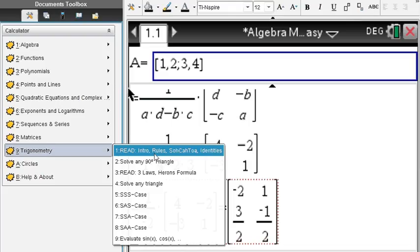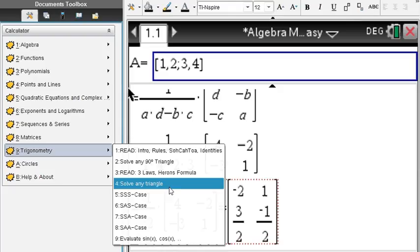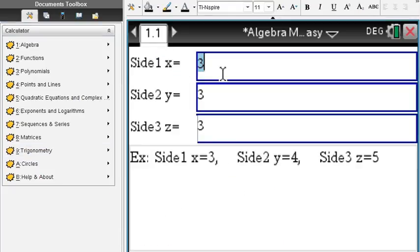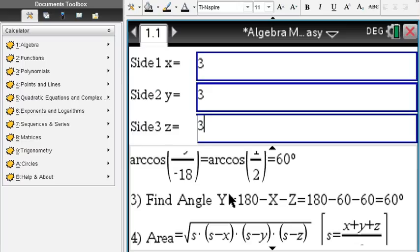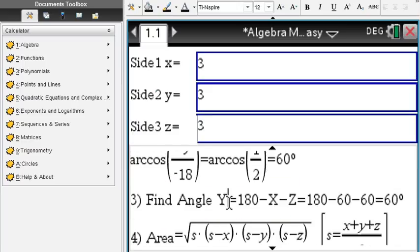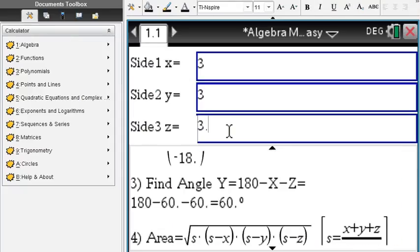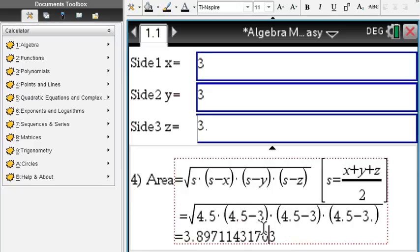Trigonometry: of course solve any 90 degree triangle or even non 90 degree triangle. Say we're going to look at a 3 by 3 by 3, 3 sides triangle. You may know it's an equilateral triangle, everything is 60 and the area is this. Remember you enter a decimal and you get decimal answers, 3.89 is the area.